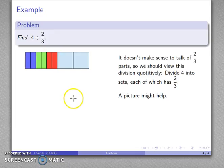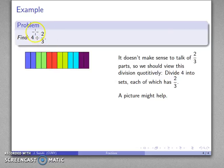I'll keep going, I'll break this up, and as a quotitive division, how many two thirds can I make from my initial four? I can count one, two, three, four, five, six, and so my quotient is going to be six.